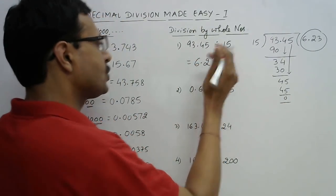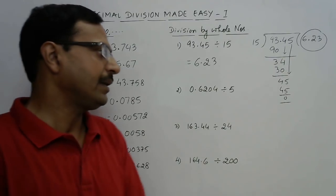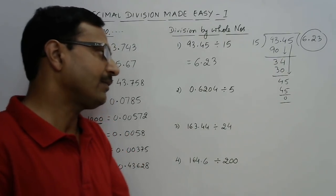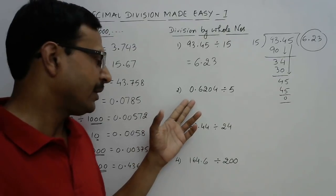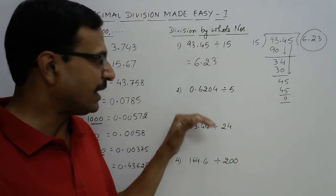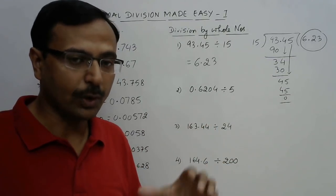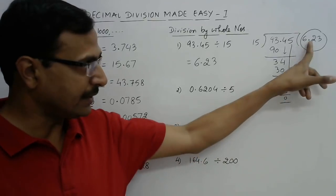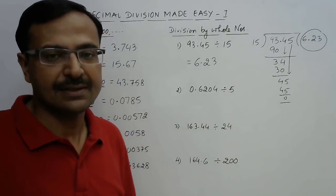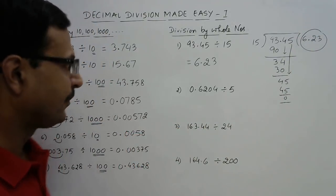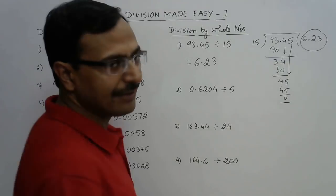So this is just traditional division, and the key understanding is when to bring the decimal into the quotient — that is the crucial part. Next example: 0.6204 divided by 5.